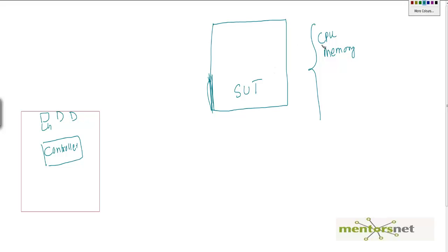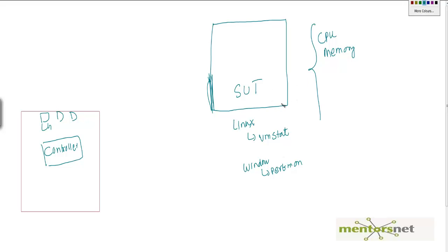To know how much CPU or memory is being used on the system under test, there are multiple commands. If you are using a Linux system, there is a command called vmstat. Running vmstat gives you system CPU consumption, user CPU consumption, and idle CPU consumption. Similarly, if you are on a Windows system, there is a tool called perfmon. Using perfmon we can find out what kind of resource utilization is happening on that system under test.